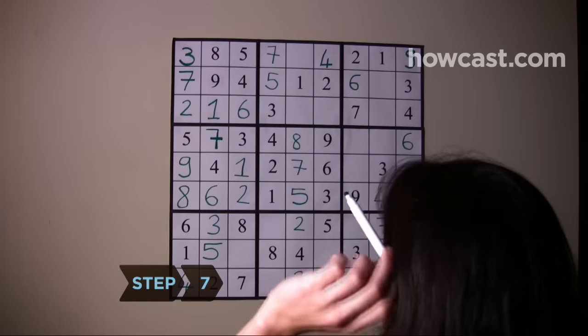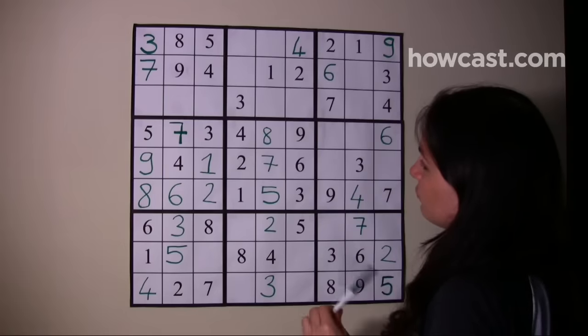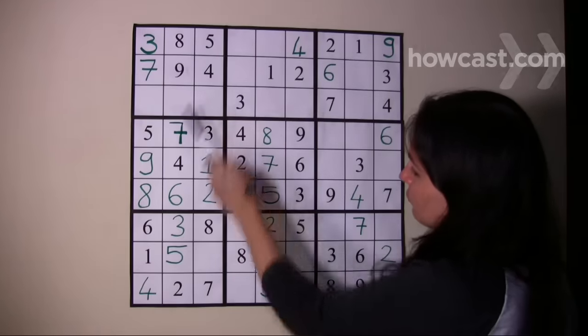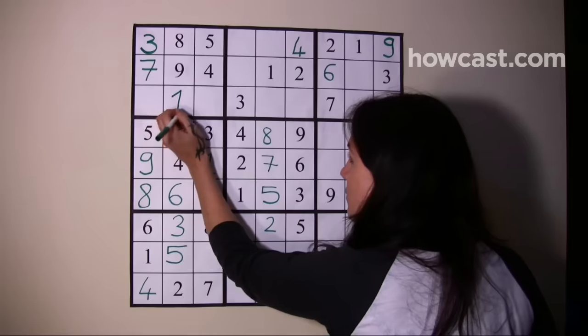Step 7: Typically, by doing simple crosshatching, you will fill in several squares. Once you've gone through all the boxes, return to the box you started with and repeat the process, as it's likely there are now more available solutions.